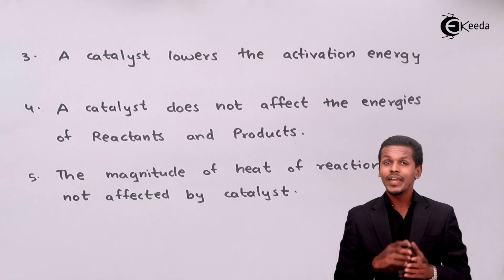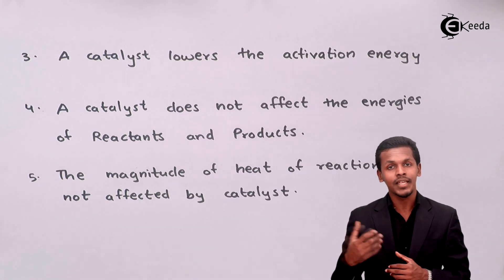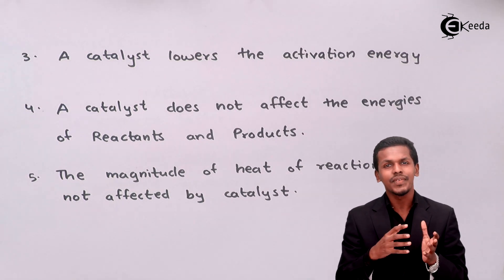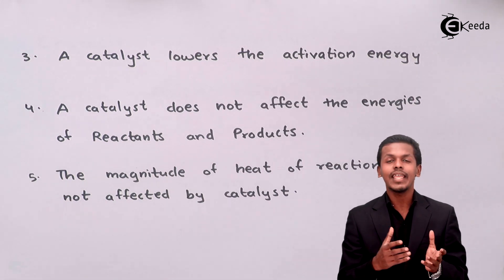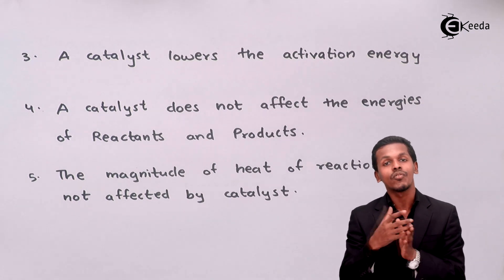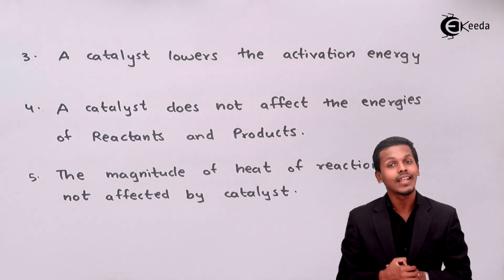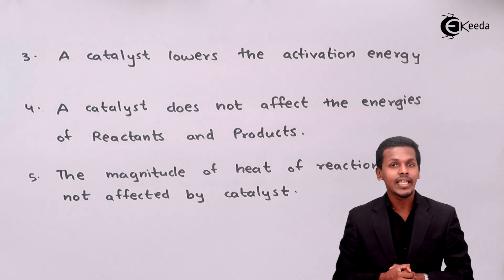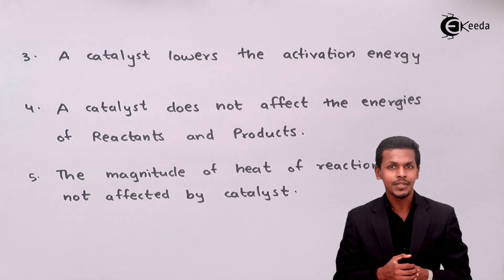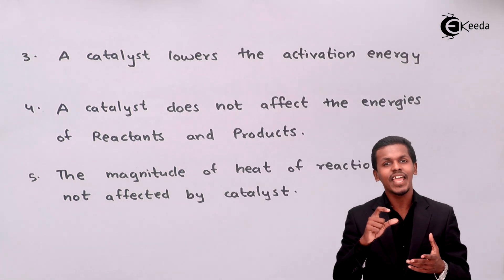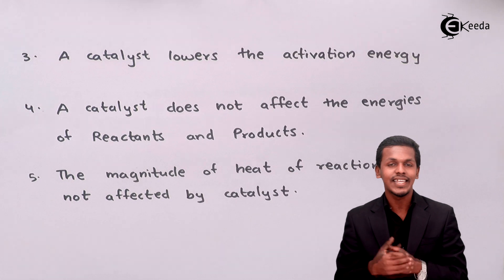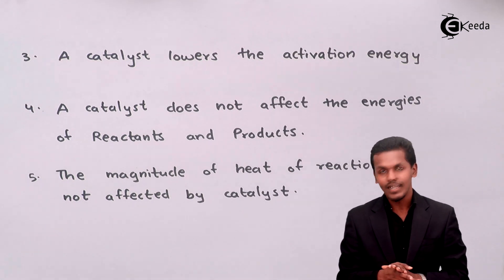When it comes to thermodynamics, whenever a reactant forms a product it must cross an energy barrier, which is known as the potential barrier or activation energy. When a catalyst is added to a reaction mixture, the catalyst plays a very important role in reducing or lowering the activation energy, allowing the reactants to cross a smaller energy barrier and easily yield the product C plus D.